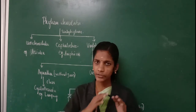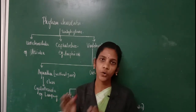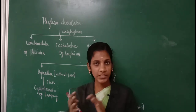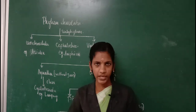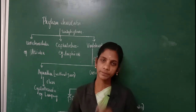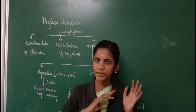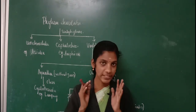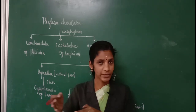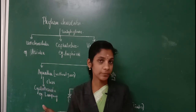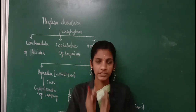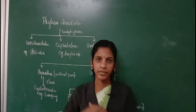This notochord will be present throughout the life in the case of lower chordates, but in the case of higher chordates, notochord will be present only during the embryonic period. Later, the notochord is either degenerated or replaced as a vertebral column. That means when a higher organism becomes adult, their notochord is replaced as vertebral column.